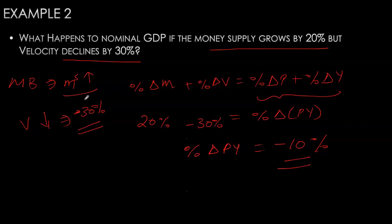When people fear the future and hold onto additional cash rather than using it for transactions, the number of transactions declines drastically. The declining velocity offsets the increased money supply, and nominal GDP actually decreases by 10%. We saw this in the aftermath of the financial crisis — the US Federal Reserve injected huge amounts of money, yet nominal GDP still declined, and data shows velocity also declined. Velocity depends on people's behavior, which cannot always be predicted. When money demand is unstable and velocity is not constant, the quantity theory of money is completely ineffective for controlling nominal GDP or inflation.